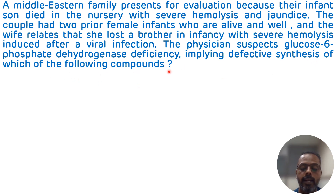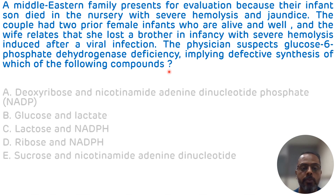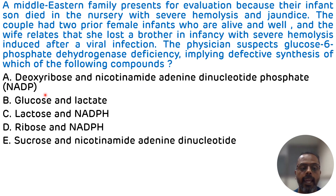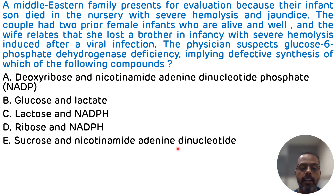Now let's see what the options are. Option A: Deoxyribose and NADP. Option B: Glucose and Lactate. Option C: Lactose and NADPH. Option D: Ribose and NADPH. Option E: Sucrose and Nicotinamide Adenine Dinucleotide.